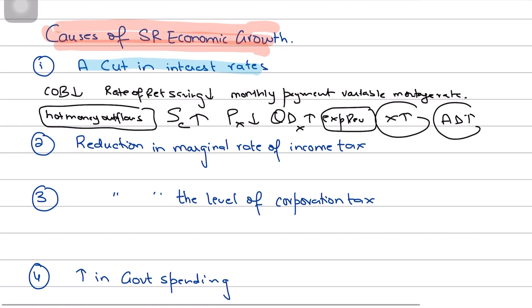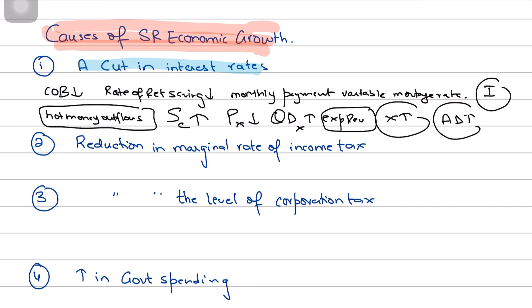A cut in interest rates also reduces the cost of borrowing for firms, enabling them to borrow more. The marginal propensity for firms to invest will go up, increasing the investment component of aggregate demand. Investment spending would go up since firms will invest more, boosting AD and hence causing short-term economic growth — stimulating the economy, probably out of recession and closing the negative output gap.